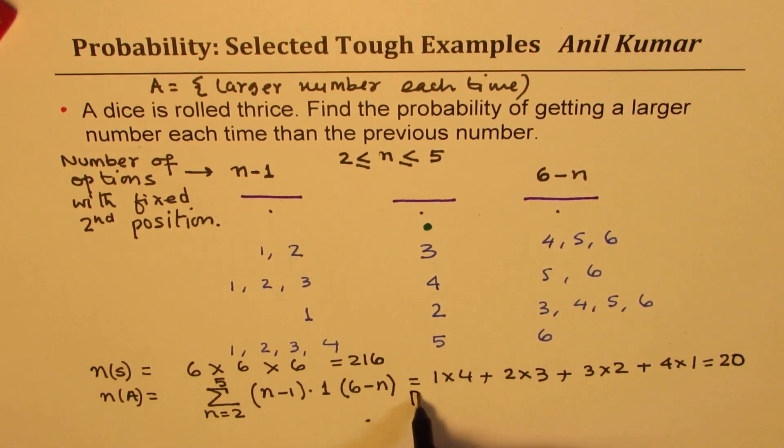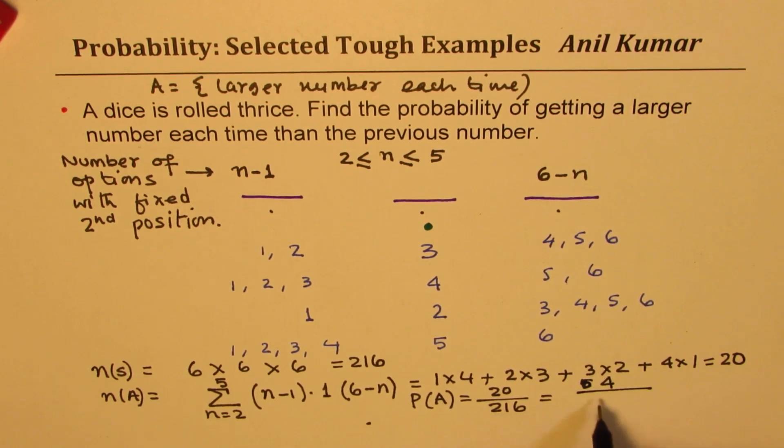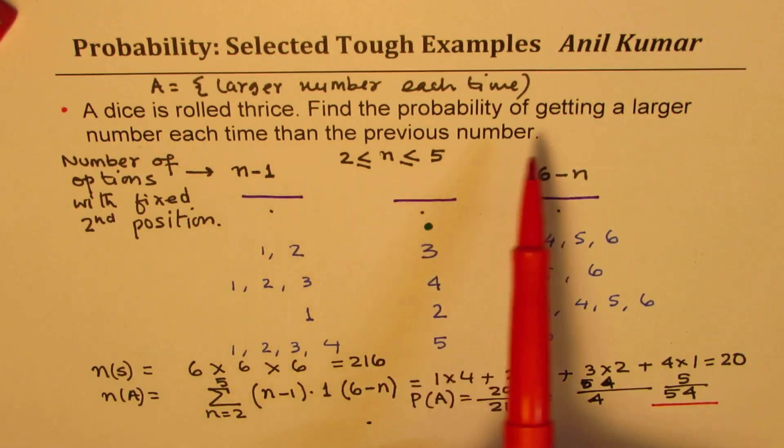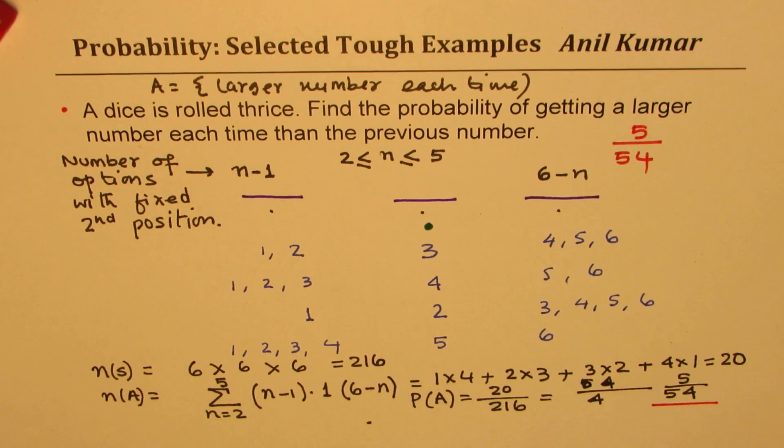And therefore, the probability of the event is ratio of these two, which is 20 over 216. So that is what we get. And we can simplify this. We can divide both by four. So dividing by four, we get five over four times five is 20 and 16 is four. So we get five over 54 as our answer. Is that clear to you? Right. So I hope you understand the method. It's a very tricky question and it could be asked in different ways. But it gives you definitely a method to solve similar questions. So the probability of getting a larger number each time than the previous one is five over 54. And that is how you could solve it.